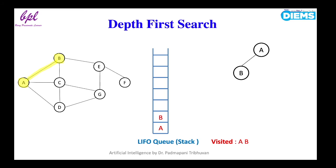Out of these, let us select node B. Node B will be added to the stack as it is not a goal state, then it will be expanded further and added to visited nodes. From node B there are two different paths: one to node E and another to node C. Let us select node E. Node E will be added to the stack and expanded as it is not a goal state, and it will be added to the visited list.